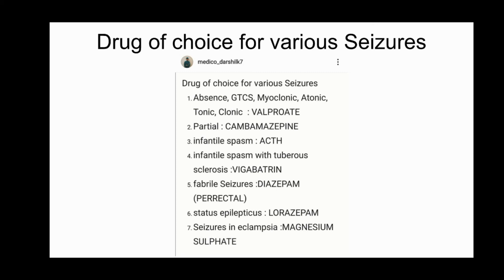For febrile seizures, the drug used is diazepam per rectal. For status epilepticus, the drug used is lorazepam. For seizures in eclampsia — which means in pregnancy — the drug used is magnesium sulfate.